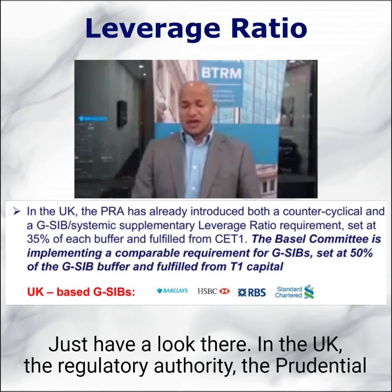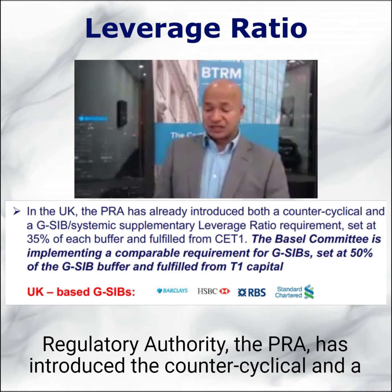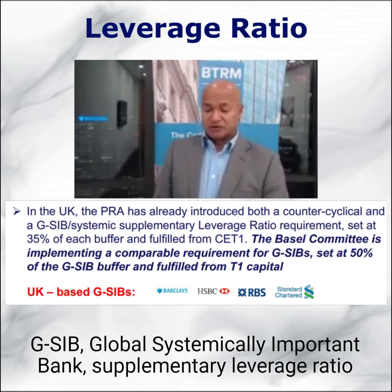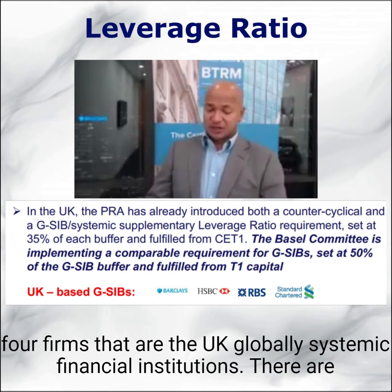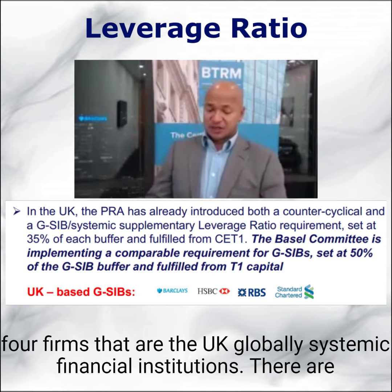In the UK, the regulatory authority — the Prudential Regulatory Authority, the PRA — has introduced countercyclical and G-SIB (global systemically important bank) supplementary leverage ratio requirements. Leverage ratio capital is Tier 1 capital, and you can see there are four firms that are UK globally systemic financial institutions with additional leverage ratio requirements.